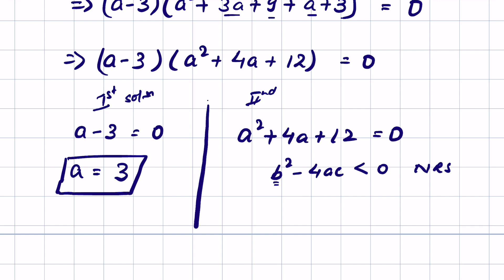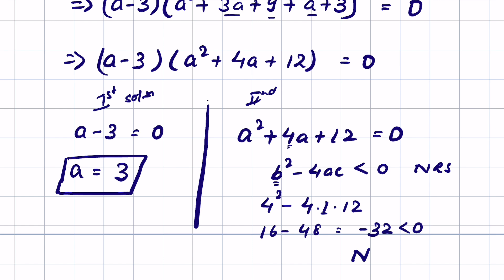So b is the coefficient of a, which is 4. So 4 square minus 4 times a — the coefficient of a square is 1 — times c, which is 12. This gives 16 minus 48, equal to minus 32, which is less than 0. So no real solution — hence not possible.